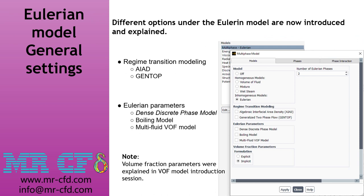Next we'll explain different sub-models available when you enable the Eulerian model. We will explain regime transition modeling using algebraic interfacial area density, or AIAD, and generalized two-phase flow, or GENTOP. We'll also cover Eulerian parameters such as the boiling model and multi-fluid VOF model. The dense discrete phase model is not covered in this course — more info is available in the DPM training course. Volume fraction parameters are covered in the VOF concept session.